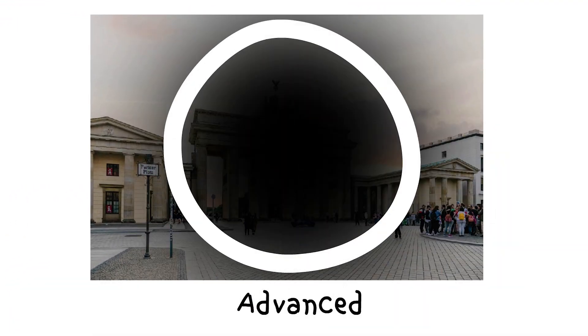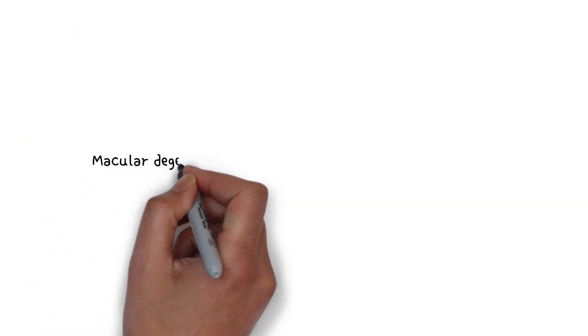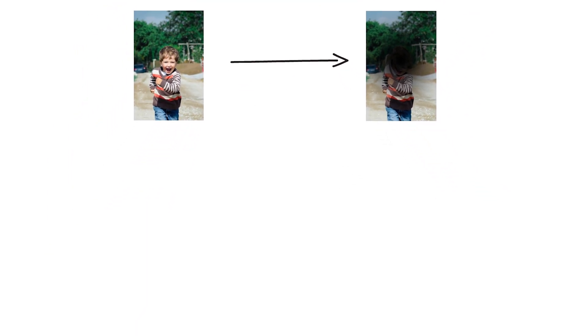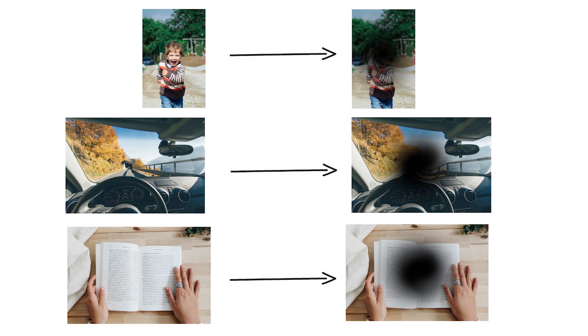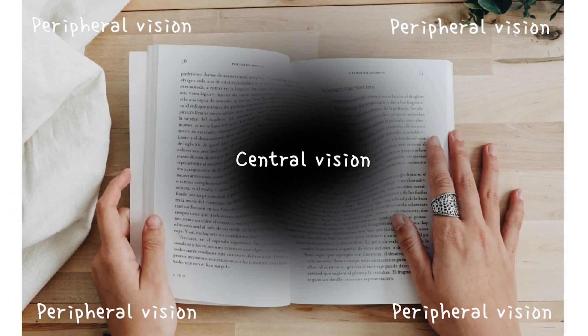With macular degeneration, you lose your central vision. While it does not result in complete blindness, loss of central vision can make it hard to recognize faces, drive, read, or perform other activities of daily life. However, your peripheral vision will still be normal.